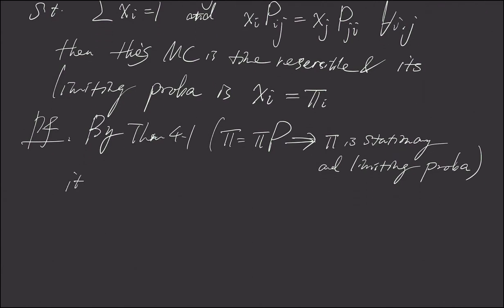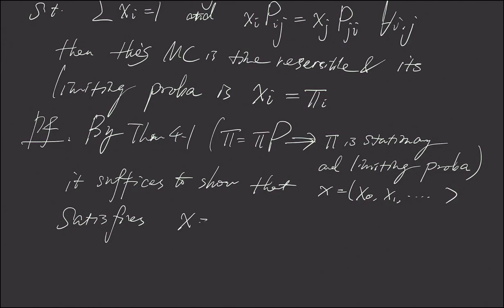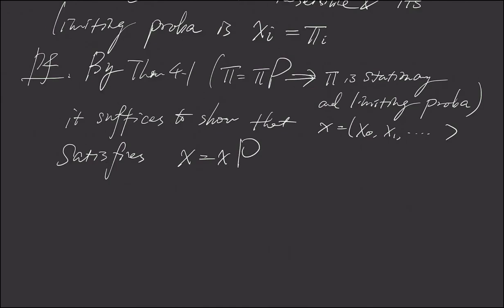We just have to show this x satisfies this equation. This x equals this x_0, x_1, etc. This satisfies this x equals x times the one-step transition. The proof is also very straightforward because we know that x satisfies this time-reversible equation.